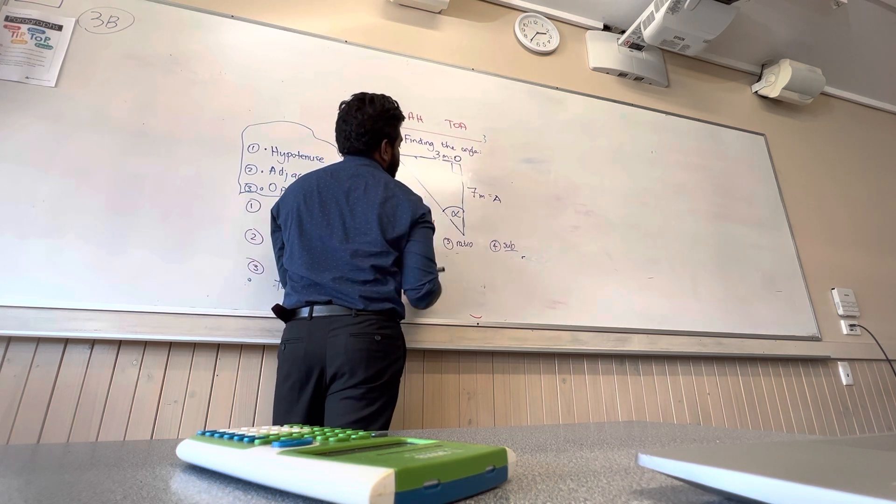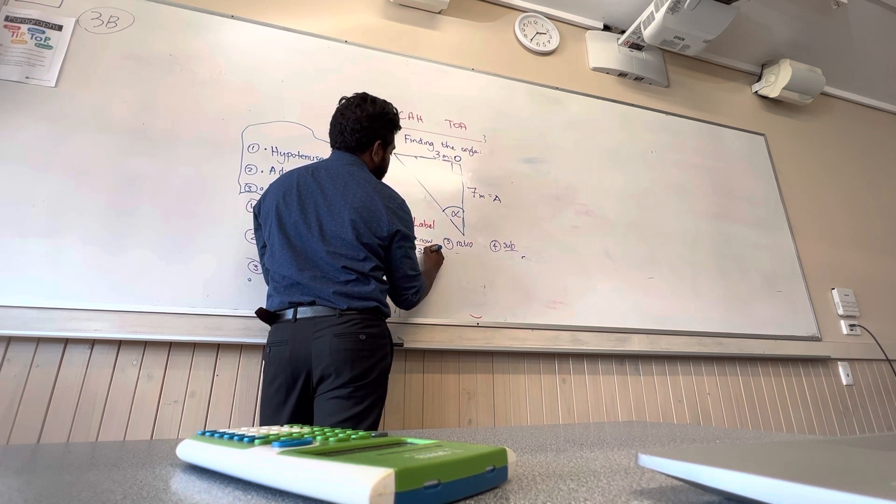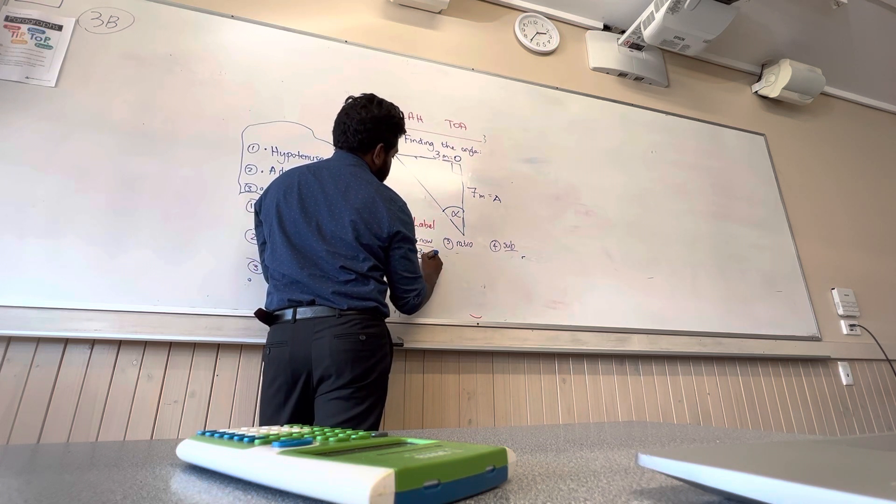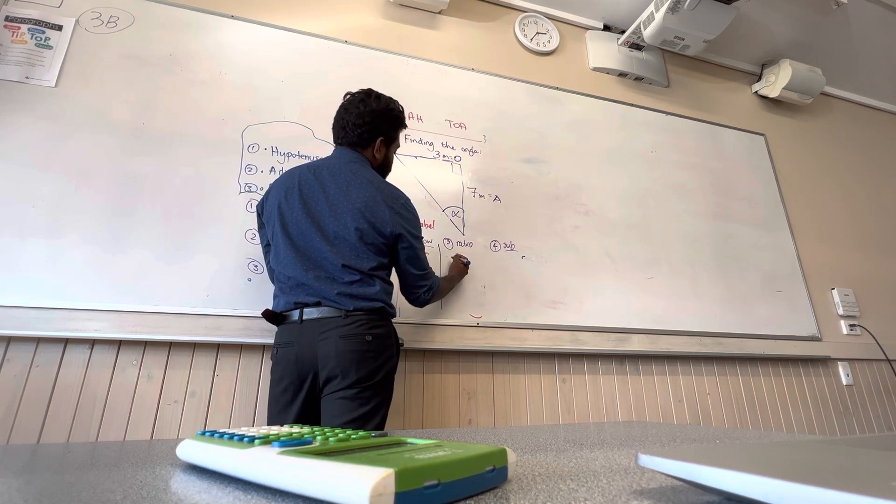That's going to be adjacent. We're going to write down what we know. Our opposite is equal to three meters, adjacent is equal to seven meters. Our alpha, we have no idea. Now, the ratio we've got is O and A.